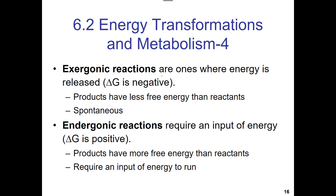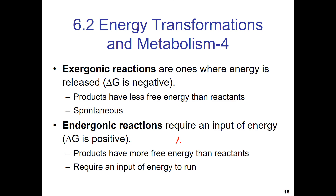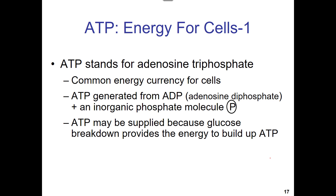Exergonic reactions are ones where energy is released — for example, ATP being hydrolyzed to ADP plus phosphate; this gives up energy, so it's negative delta G. Endergonic reactions require an input of energy — for example, making ATP: taking ADP plus phosphate and making ATP. Think of everyday examples like leaves falling (exergonic) versus raking leaves, or cooking, or burning wood.